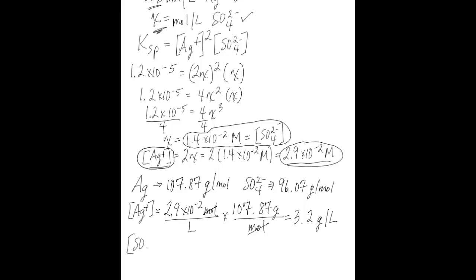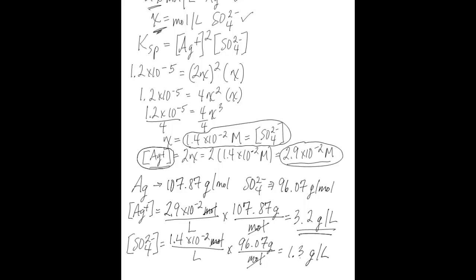Doing the same for sulfate: multiply 1.4 times 10 to the negative 2 moles per liter by the molar mass of sulfate, 96.07 grams per mole. The moles cancel, and you're left with 1.3 grams per liter. Those are your solubilities for the two ions in grams per liter.